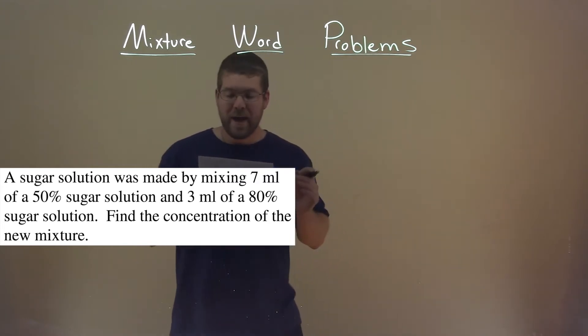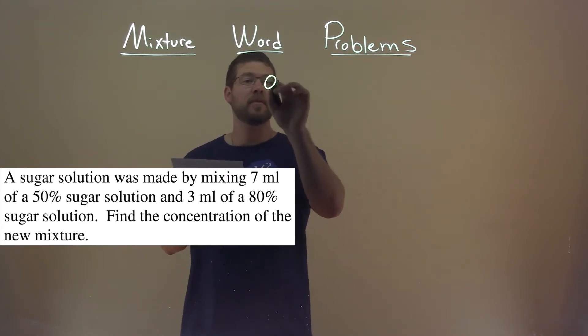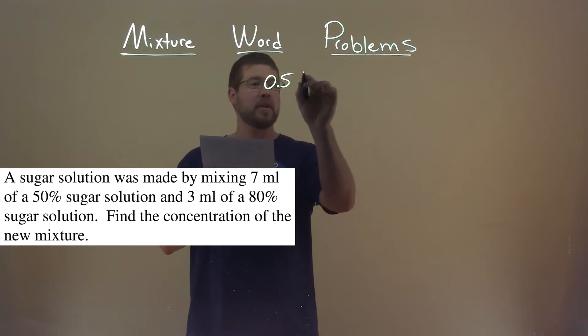So we have here the first sugar solution is 50%, so decimal is 0.5, and we have a total of 7 milliliters of that.